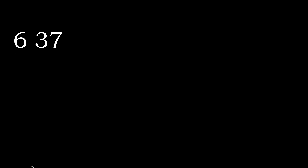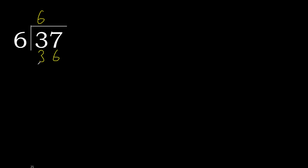37 divided by 6. 3 is less, therefore next. 37 is not less, therefore with 37. 6 multiplied by which number is nearest to 37 but not greater? 6 multiplied by 8 is 48, which is greater. 6 multiplied by 7 is 42, which is greater. 6 multiplied by 6 is 36 — it is not greater.